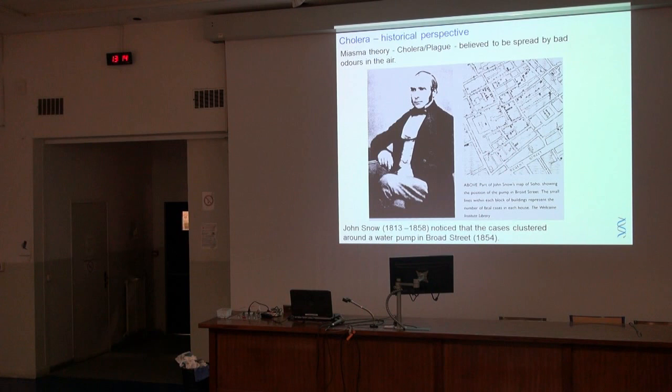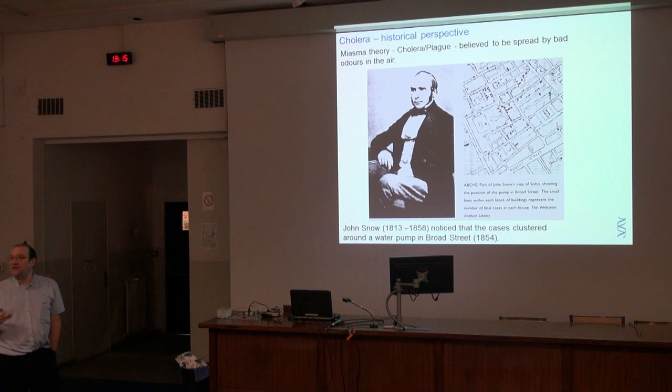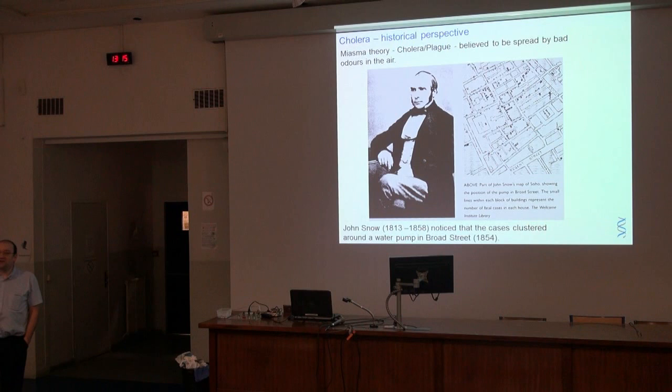I'm going to switch to Vibrio cholerae and show how we can use this ability to date trees to understand transmission within cholera. Cholera is a really interesting disease — it was actually the subject of the first ever epidemiological investigation. There was a frequent outbreak of cholera in London in 1854, and John Snow decided to try and find out where the outbreak had come from. At that time, before Pasteur and Koch, nobody knew of the existence of bacteria, let alone that they caused disease. The prevailing theory was the miasma theory — that cholera was caused by bad odours in the air.